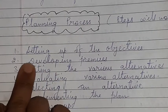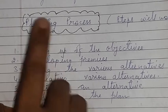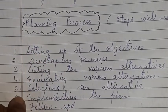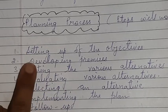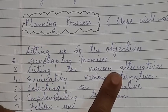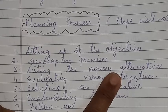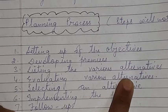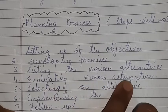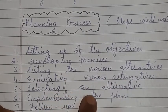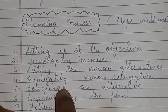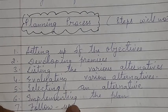In steps, for example, the 2nd point 'developing premises' cannot be written in 1st place — the sequence will never change. Setting up of objective comes first, then developing premises, then listing the various alternatives, evaluating various alternatives, and selecting an alternative. Then 6th is implementing the plan and last is follow-up.